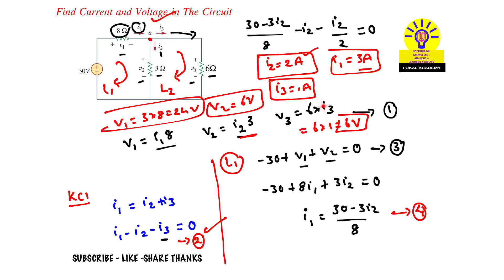These are the required voltages and currents for the given problem. This is the process of simplification. Thanks for watching — please subscribe, like, and share.